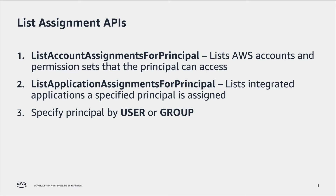With list account assignments for principal, you can retrieve a list of the IAM Identity Center-associated AWS accounts and permission sets that the principal can access. You can specify the type to be user if you'd like to list the account assignments for a specific user, or you can specify group to list the account assignments for a specific group of users. Similarly, with list application assignments for principal, you can list which IAM Identity Center-integrated applications a specific user or group is assigned.